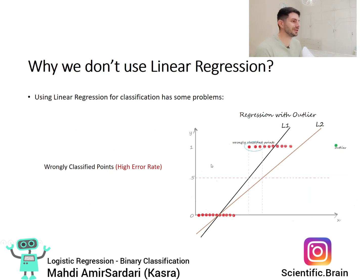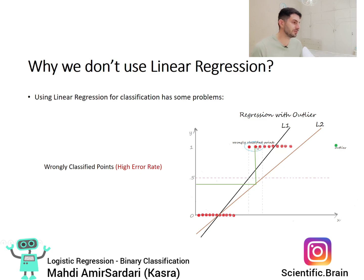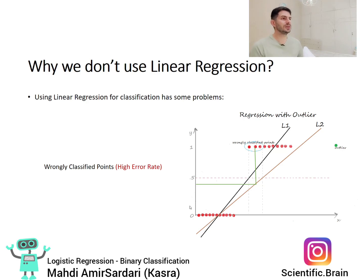Another problem is the error rate — we get wrong misclassification. Suppose line L2 is our fitted line. There are data points devoted to class 1, but the linear regression model predicts their value as less than 0.5, so it allocates them to class 0. This is the error. We get a high error rate when using linear regression instead of logistic regression for classification problems.